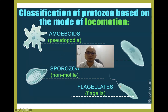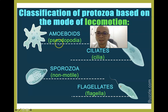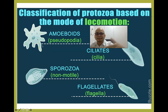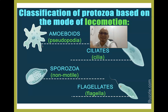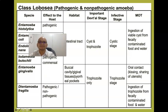Protozoans may be classified according to the type of locomotory organelles. For amoeba, the locomotory organelle is the pseudopodium — pseudo meaning false, these are cytoplasmic extensions that extend so they can obtain food. Ciliates have cilia; Sporozoa have no specific locomotory organelles; and flagellates have flagella.